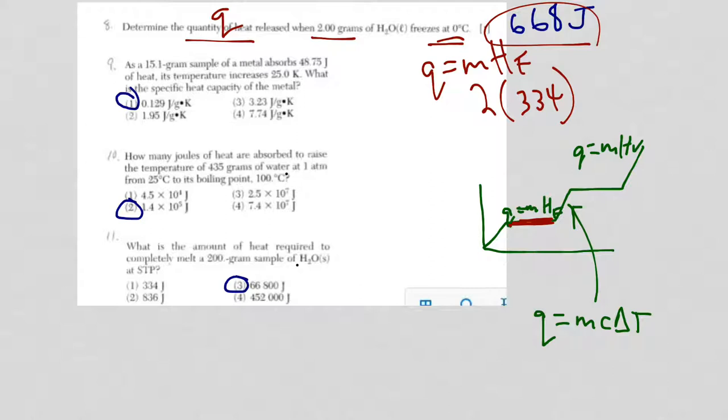So for number 9, now we're dealing with a 15.1 gram sample. It's absorbed, it's of a metal, so it's not water now, so we can't use the front of the reference table. We have a Q of 48.75 joules. Temperature is increased 25 K. So we have a delta T. We're looking for the specific heat capacity. So with this, we're going to use Q equals MC delta T.